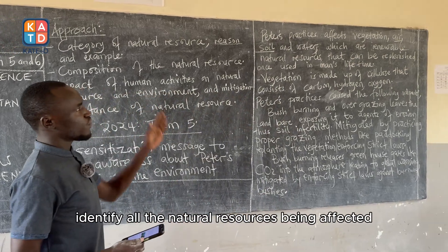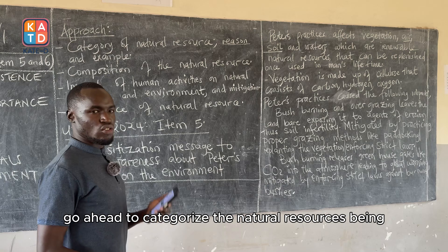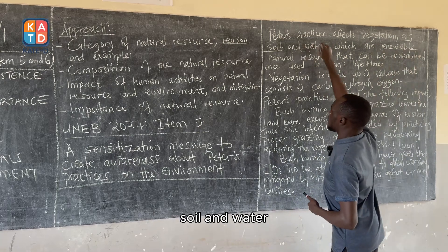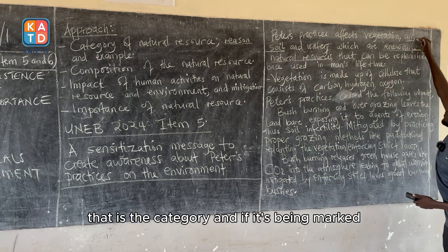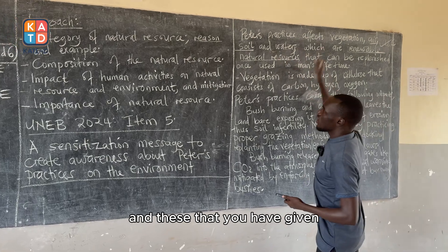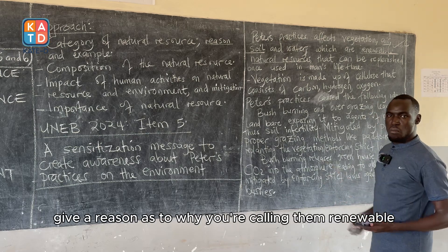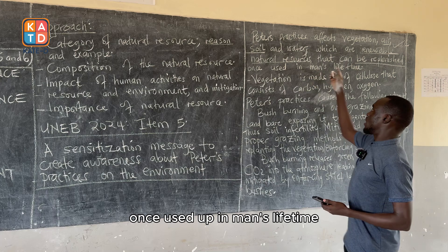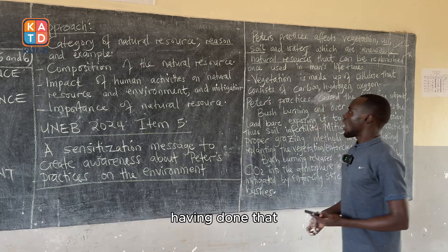Always identify all the natural resources being affected in the scenario. After that, go ahead to categorize them. In this scenario, vegetation, air, soil, and water are all simply renewable natural resources — that is the category, and you get a mark for it. Those are also the examples of natural resources in that category. Then give a reason as to why you are calling them renewable: they can be replenished once used up in man's lifetime — that is where you get the mark for the reason.